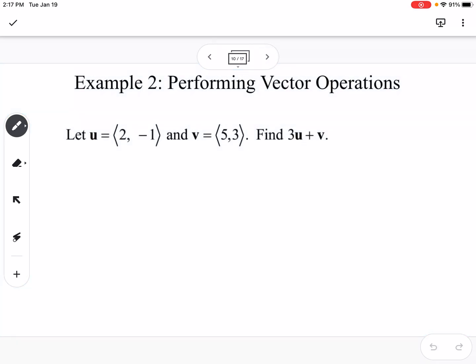Performing vector operations: If we have u = (2, -1) and v = (5, 3), we're going to find 3u + v. First, 3u would be 3 times 2, which is 6, and 3 times -1, which would be -3. So then 3u + v would be (6 + 5, -3 + 3), which is (11, 0).